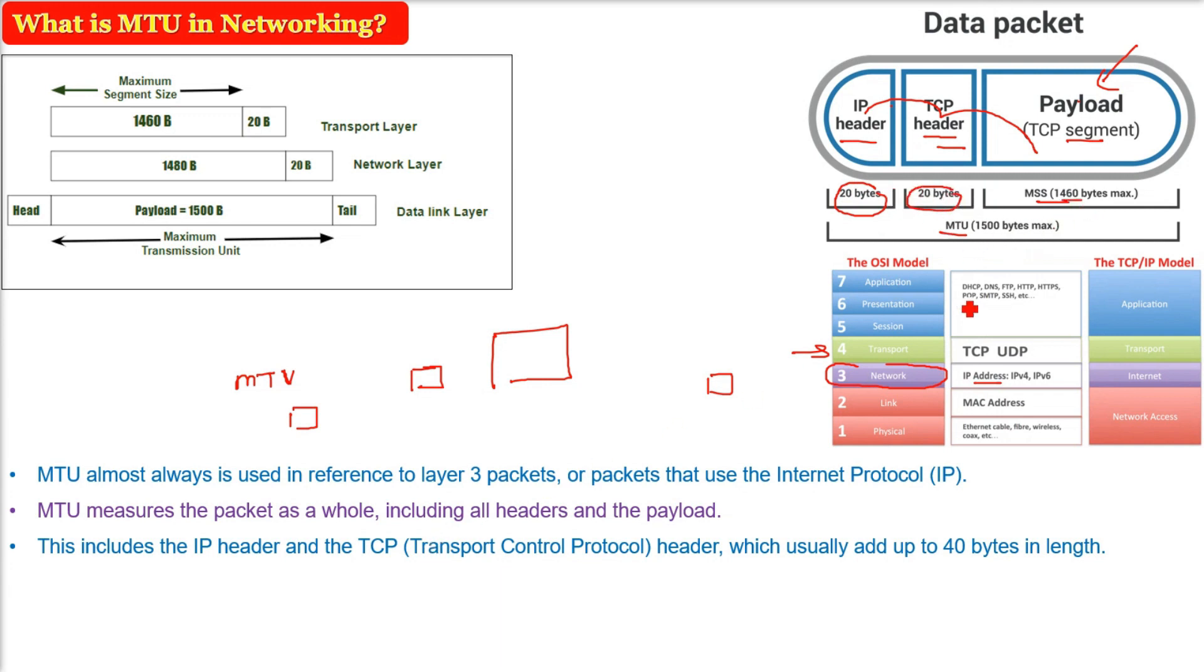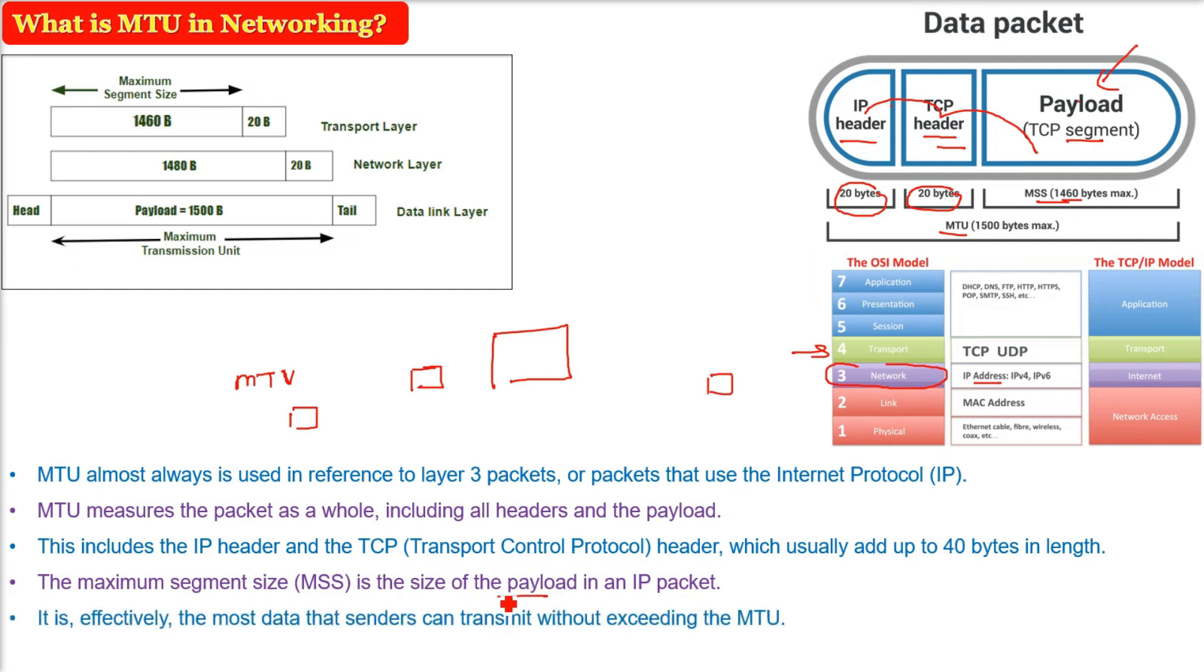I hope you have a very good understanding of MSS and MTU and what is the difference. The Maximum Segment Size MSS is the size of the payload in an IP packet. MSS is the size of the payload, that is the content. Payload added with the headers becomes MTU. It is effectively the most data that senders can transmit without exceeding the MTU, because MTU is the highest threshold, highest value, or largest size of a packet that can pass through source to destination.